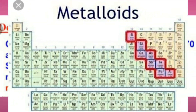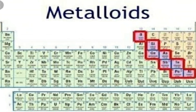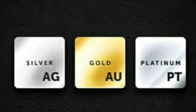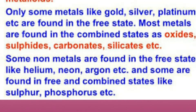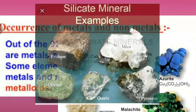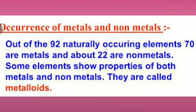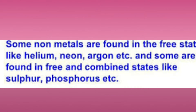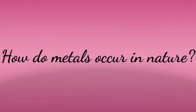Some elements show properties of both metals and non-metals — they are called metalloids. Only some metals like gold, silver, and platinum are found in the free state. Most elements are found in combined states as oxides, sulfides, carbonates, silicates, etc. Some non-metals like helium, neon, and argon are found in the free state, while others like sulfur and phosphorus are found in both free and combined states.